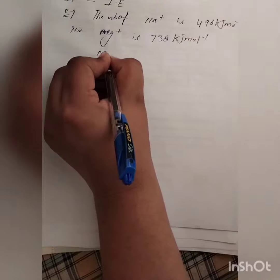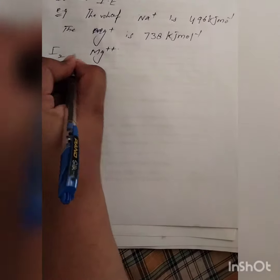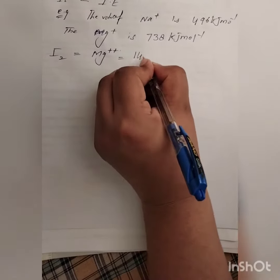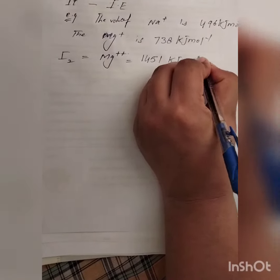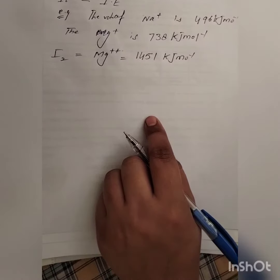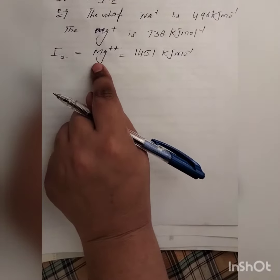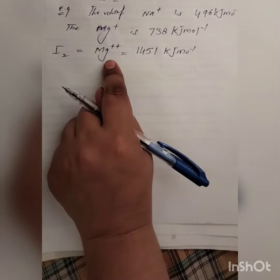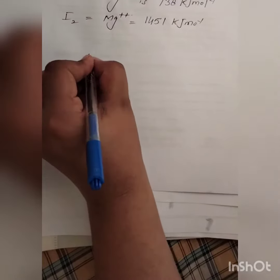Magnesium has two values of ionization energy. The second ionization energy, I2, is equal to 1,451 kJ per mole. Why is it nearly double the first ionization energy? The reason is that the effect of nuclear charge on the remaining electron in the outermost shell of magnesium is much higher than for the first ionization energy.